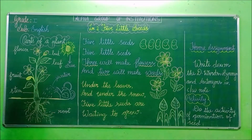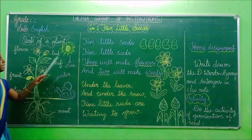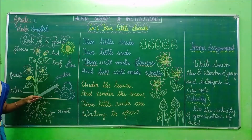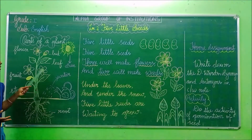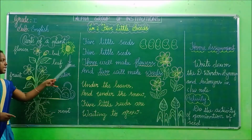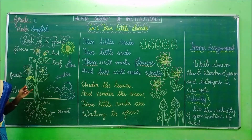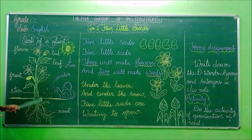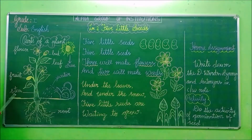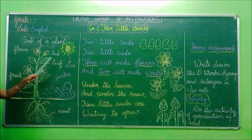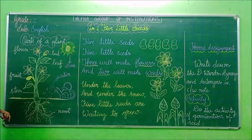So these are the parts of a plant. The sand and the water are helpers for the plant to grow. So the oxygen, sand, and water are the helpers to help the plants to grow. There are five parts of a plant: root, stem, leaf, flower, and bud. Have you all understood, children?